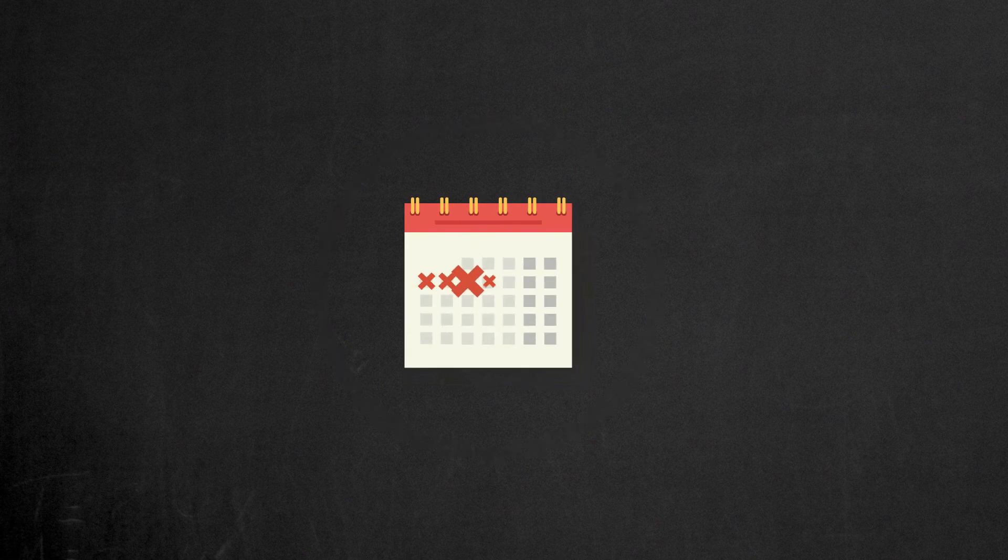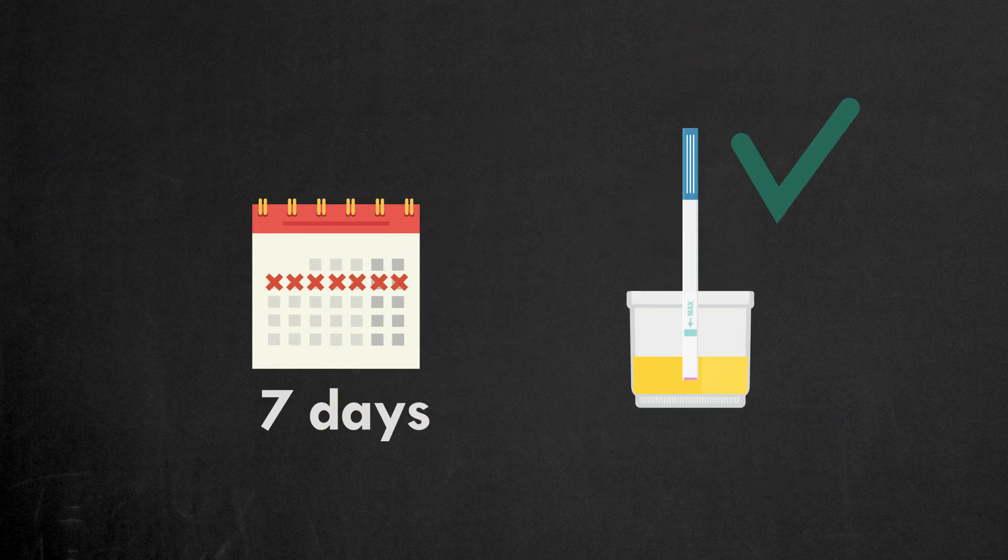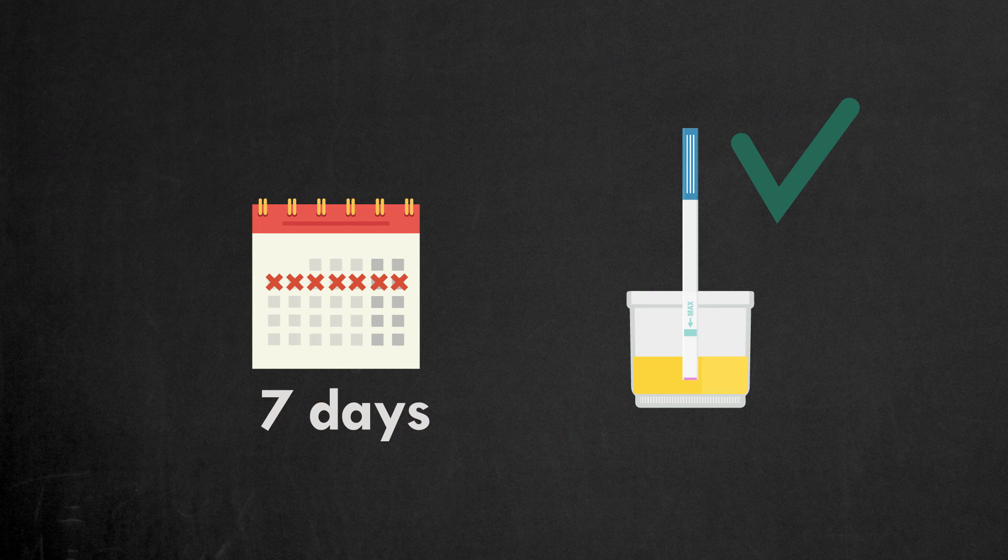So, it would take about 7 days for a skinny person to lower the concentration of weed metabolites in the urine below the detectable level.